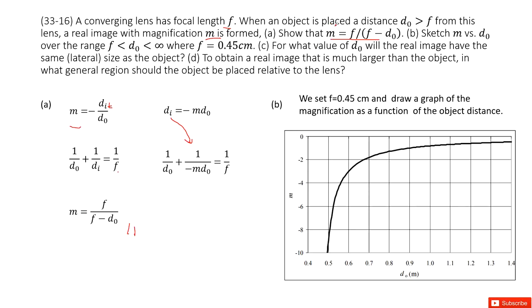The next one, we need to plot a graph of m versus d₀. So now you can see we have this equation. As we know, the focal length is 0.45 cm. So the only independent variable is d₀.